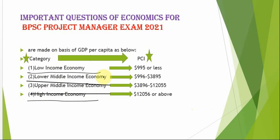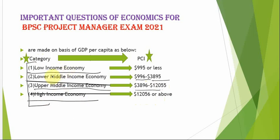Now let's see the ranges for each type. The low income economy range is $995 or less. The lower middle income economy range is $996 to $3,895. The upper middle income economy range is $3,896 to $12,055. The high income economy range is $12,056 or more. You should remember all four types of economy and their respective ranges.